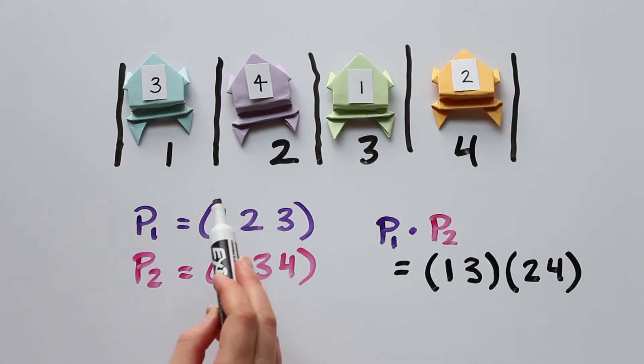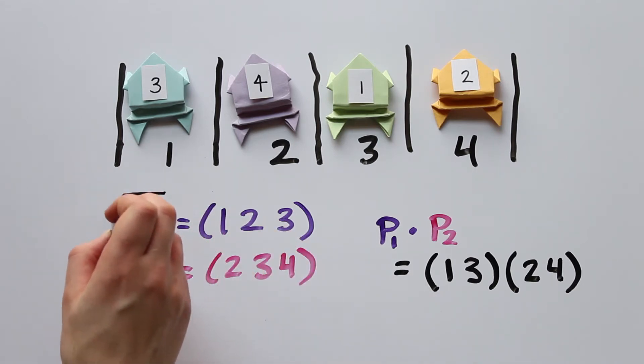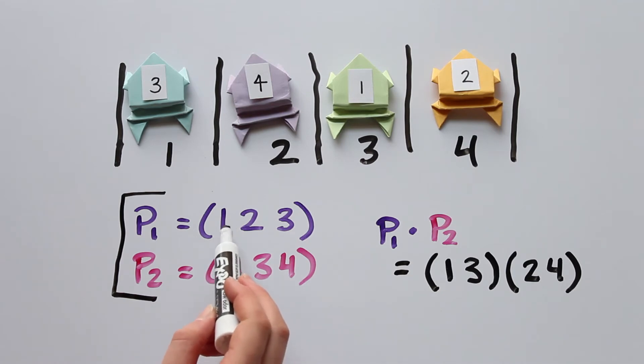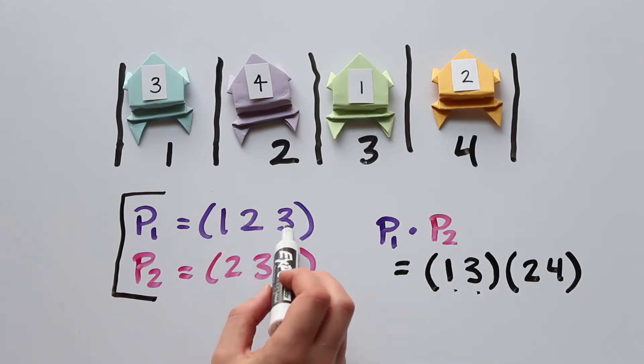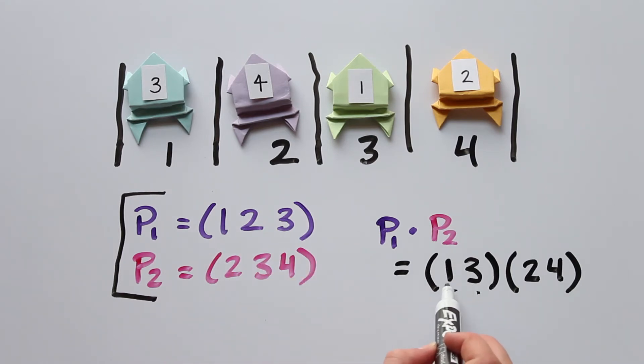We can get the same product by just looking at the numbers. See that 1 goes to 2 in p1, and then 2 goes to 3 in p2. So 1 goes to 3 after both p1 and p2. In the same way, 3 goes to 1 in p1, and then 1 doesn't change with p2, so 3 goes to 1 overall. Now see that 2 goes to 3 in p1, and then 3 goes to 4 in p2. So 2 goes to 4 overall. Finally, 4 doesn't change with p1, and then 4 goes to 2 in p2, so 4 goes to 2 overall.